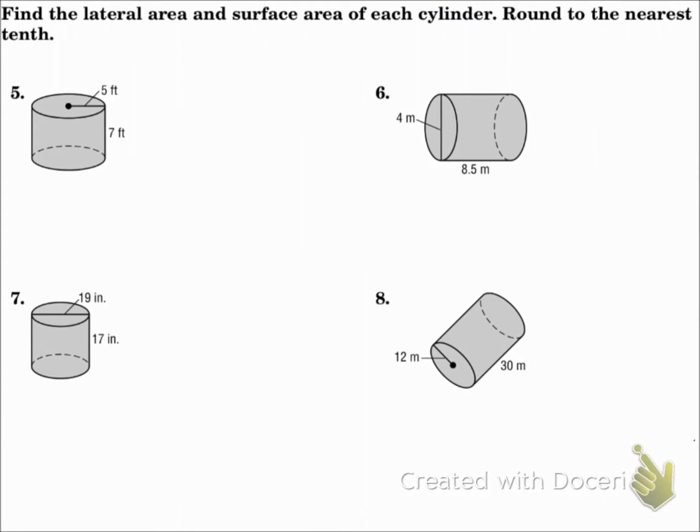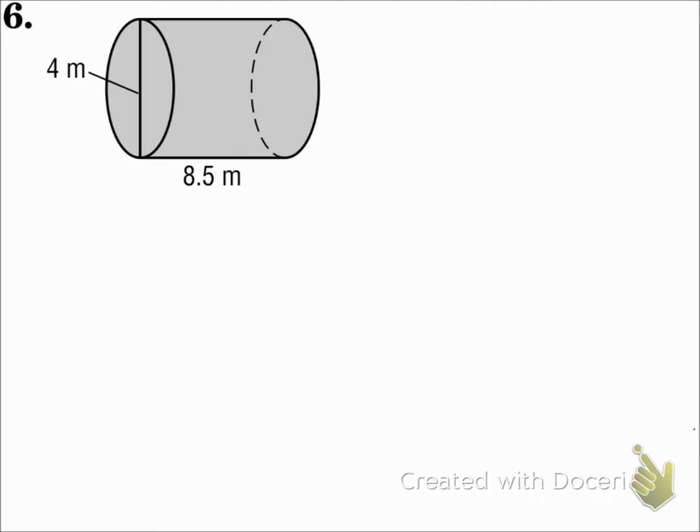Find the lateral area and surface area of each cylinder. Round to the nearest tenth. So we'll use the lateral area formula. L equals 2 pi RH.